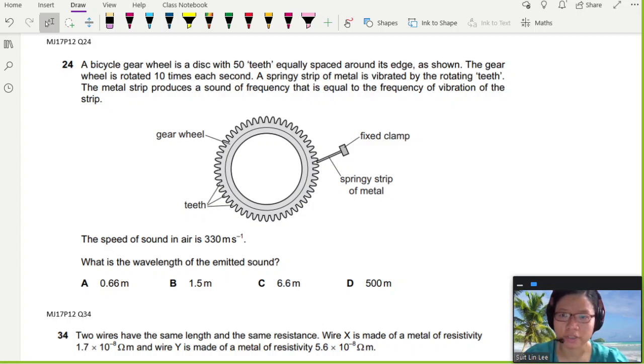This is a little bit unusual. In this question you can see that you are given a bicycle gear wheel. Oh very nice, they draw the gear for you. It's a disc with 50 teeth, so it's all those ridges on the wheel equally spaced around the edges. The gear wheel is rotated 10 times each second.